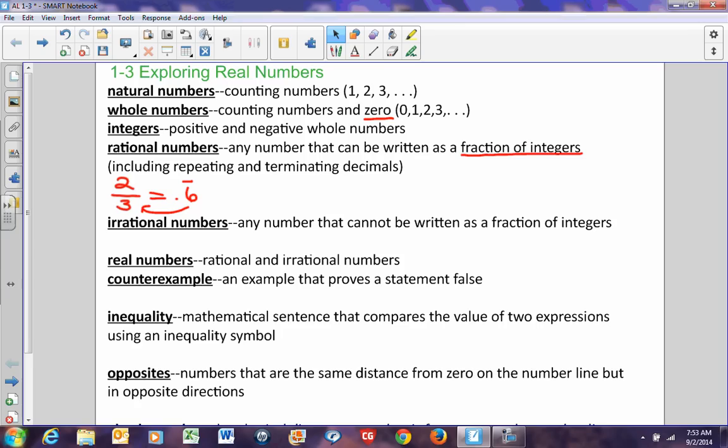Terminating decimals are decimals that end, like 1.6. 1.6 is 1 and 6/10. If we change that to an improper fraction, it becomes 16/10, which makes it a rational number because it's written as a fraction of integers. Any whole number is also a rational number because 6 can be written as 6/1, which is a fraction of integers.